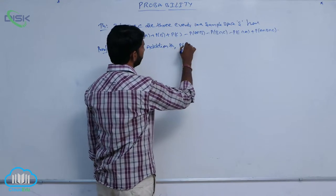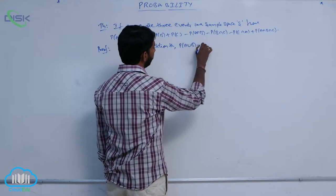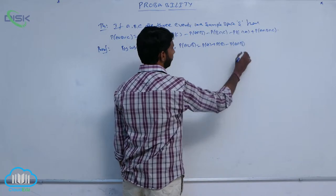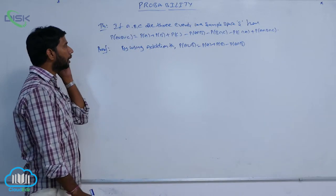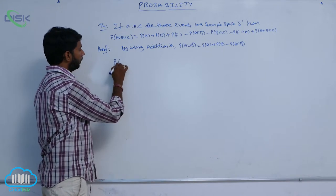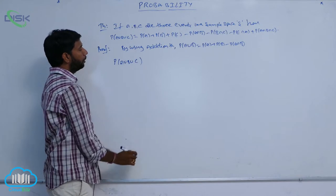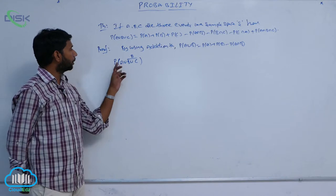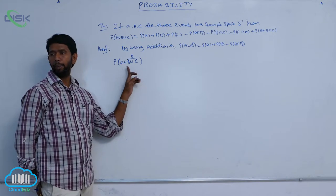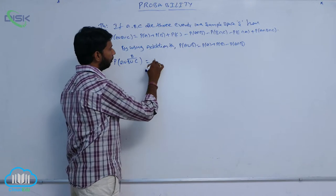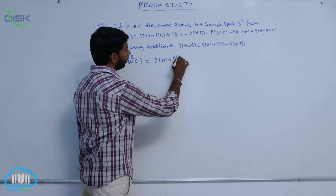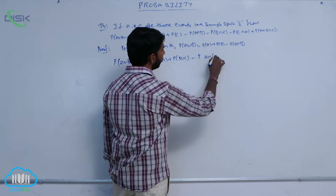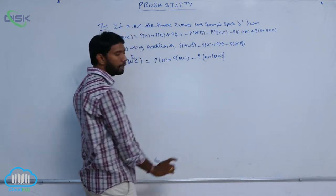By using addition theorem, P of A union B is equal to P of A plus P of B minus P of A intersection B. Apply the formula here: P of A union B union C can be considered as of the form A union B, where B here means B union C. By using addition theorem, this is equal to P of A plus P of B union C minus P of A intersection of B union C.